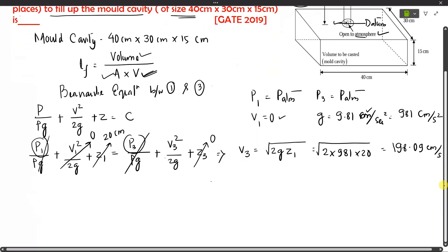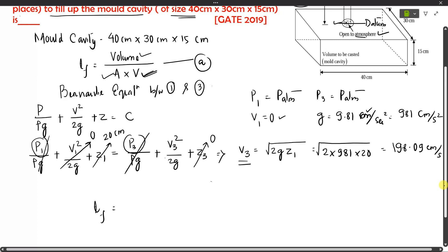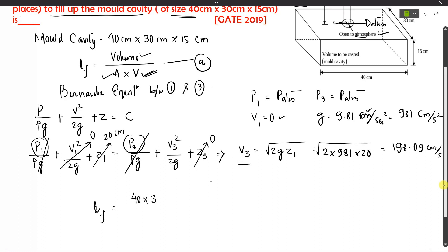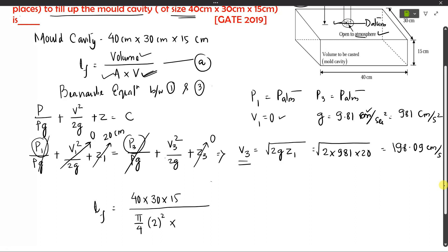Now substituting v3 into the filling time formula: tf = (40 × 30 × 15) / (A × v). The area of cross section is circular with diameter 2 cm, so A = π/4 × 2² cm². With velocity 198.09 cm/s, calculating gives a filling time of 28.92 seconds. That is our correct answer.